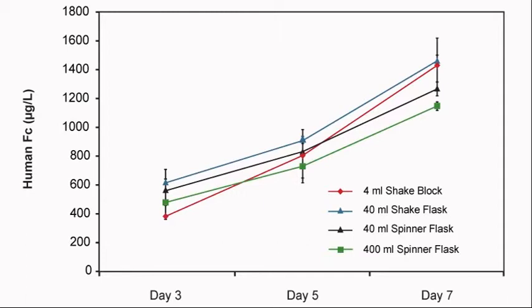For validated protein targets, scalability of transient protein production is often desirable. Linear protein expression yields have been observed using the Transit Pro transfection kit in culture volumes ranging from 4 to 400 milliliters.